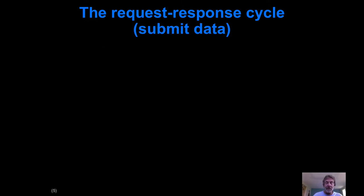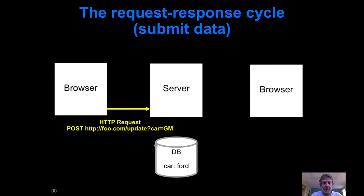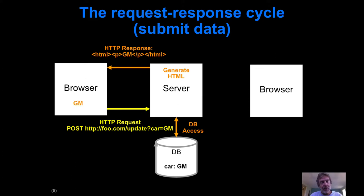If the client wants to submit data to the server, we're going to make a POST request — typically you're filling out a form. We get some kind of URL with arguments that explain what the new car is going to be — say, a General Motors car. There's a database access, the car field is replaced from Ford to GM, some HTML is generated showing the new car value, and we send back HTML to the browser indicating the car is now a GM.